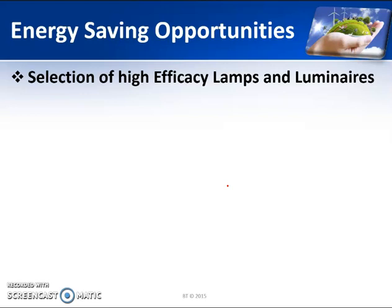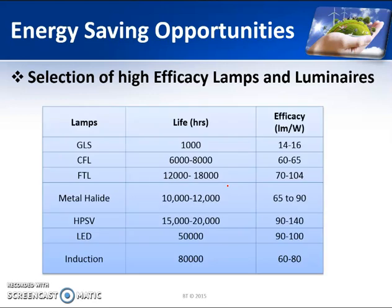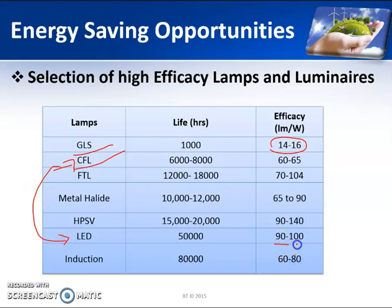The next opportunity is selection of high-efficiency lamps and luminaires. Normal incandescent lamps and CFL lamps are less costly but have very low efficacy — in the case of incandescent lamps it is only 14 to 16 lumens per watt. Incandescent lamps were earlier replaced with fluorescent lamps, and now all fluorescent lamps are being replaced with LED lamps, which have a luminous efficacy of 90 to 100. Wherever possible, we should replace the least efficient lamps with high-efficacy lamps.